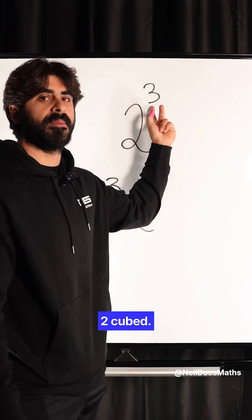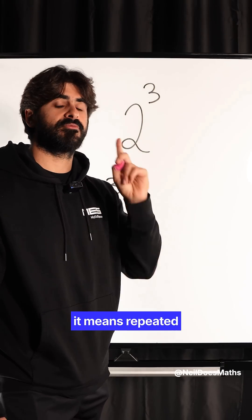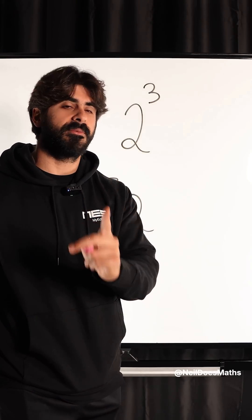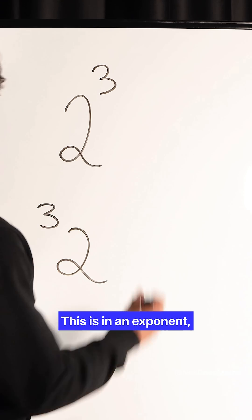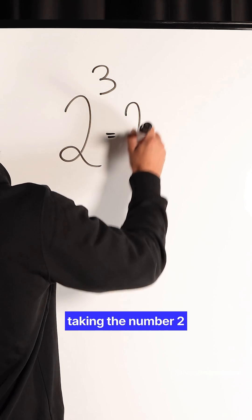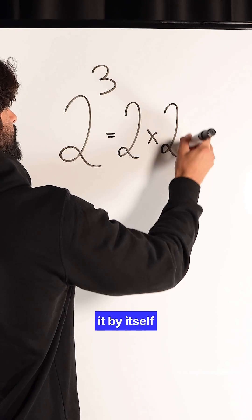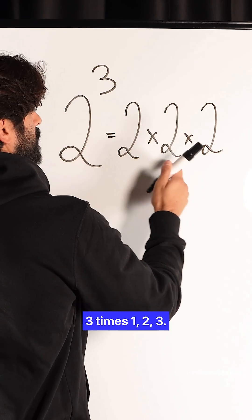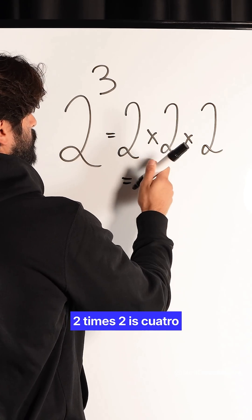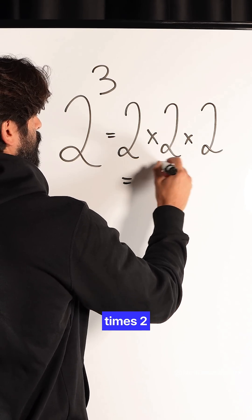Now this says two cubed. When the power is on the right side, it means repeated multiplication. This is an exponent, meaning we're taking the number two and multiplying it by itself three times: one, two, three. Two times two is four, times two, eight.